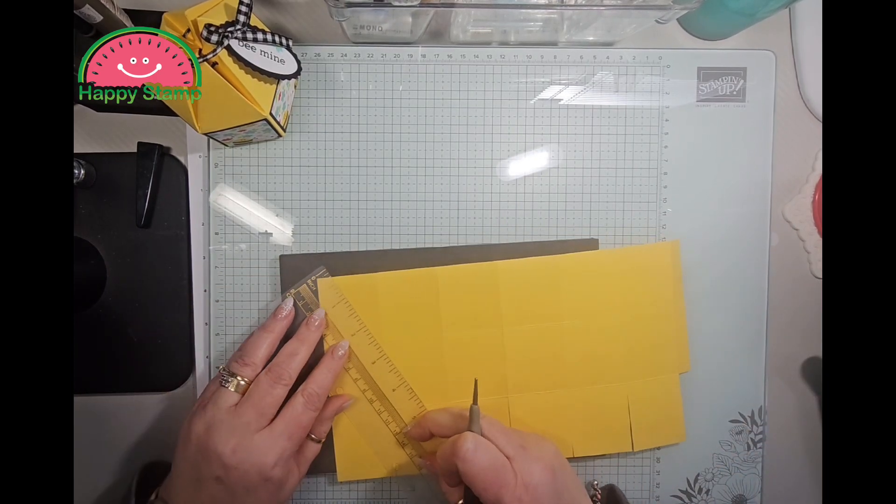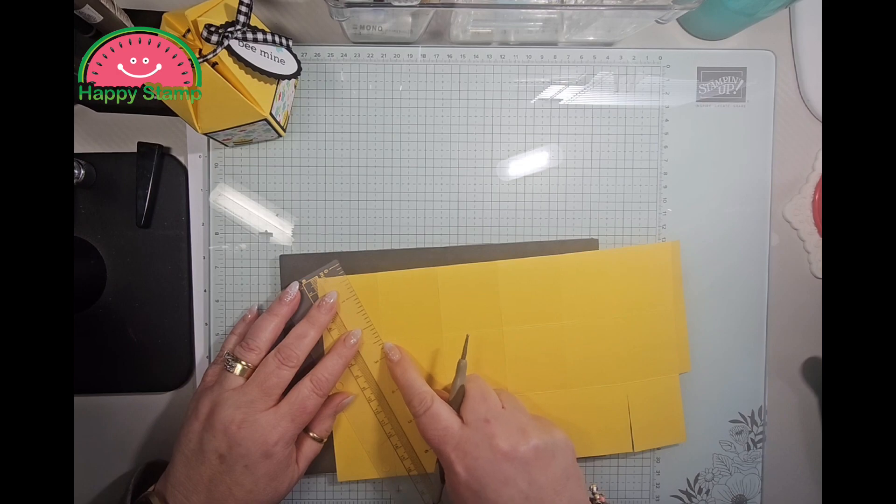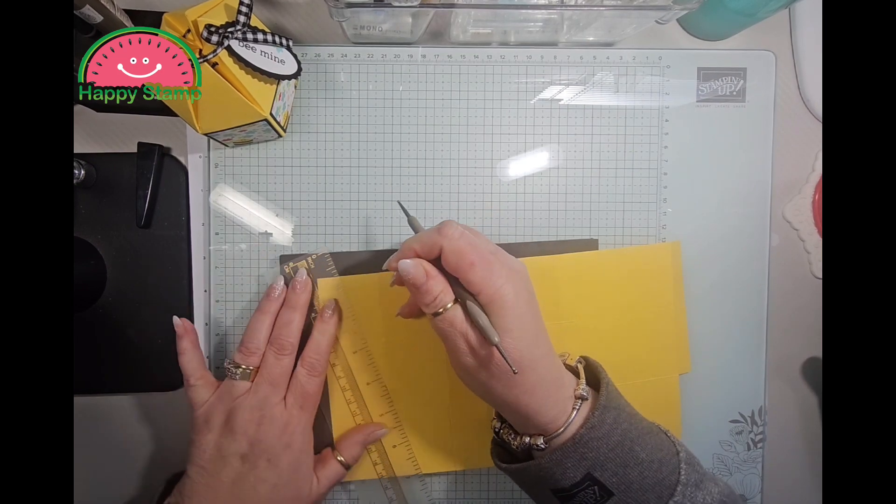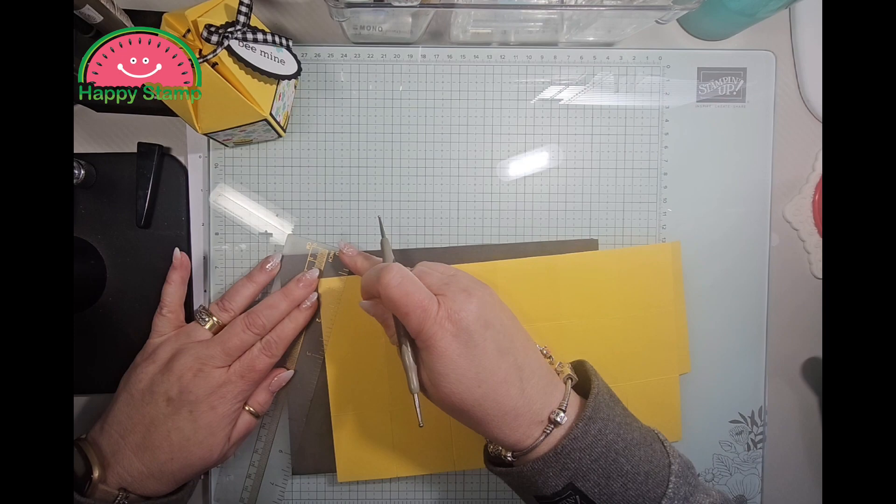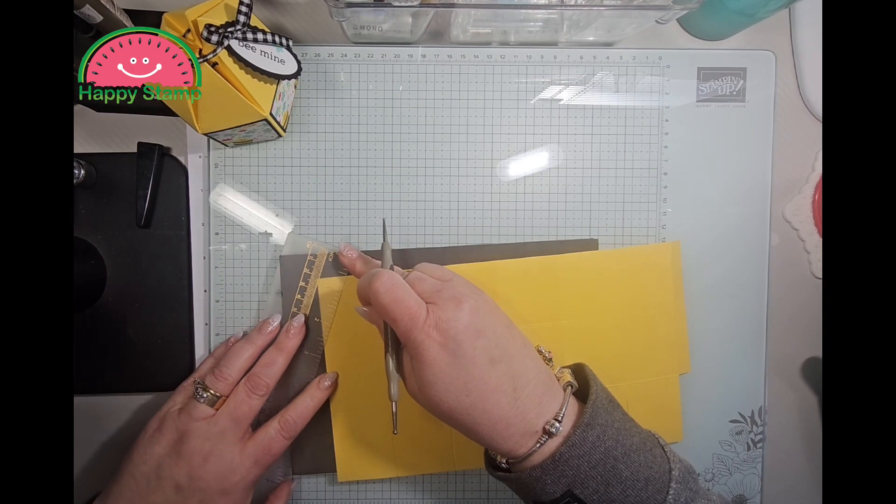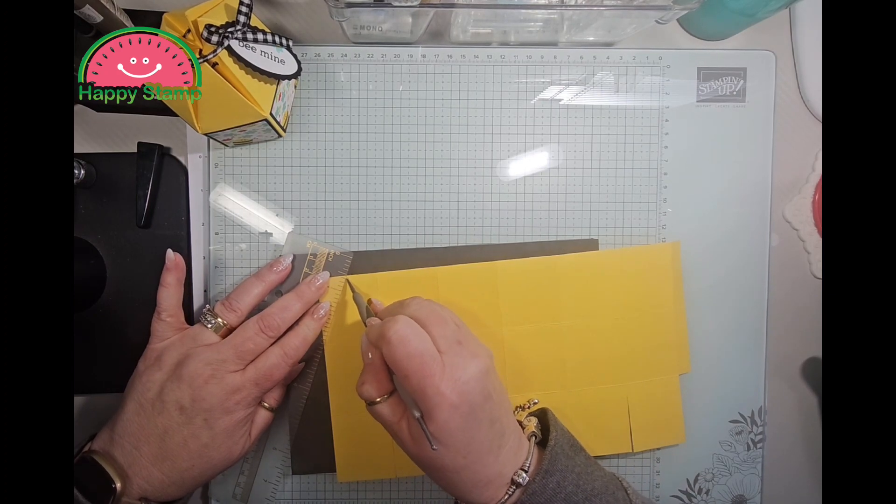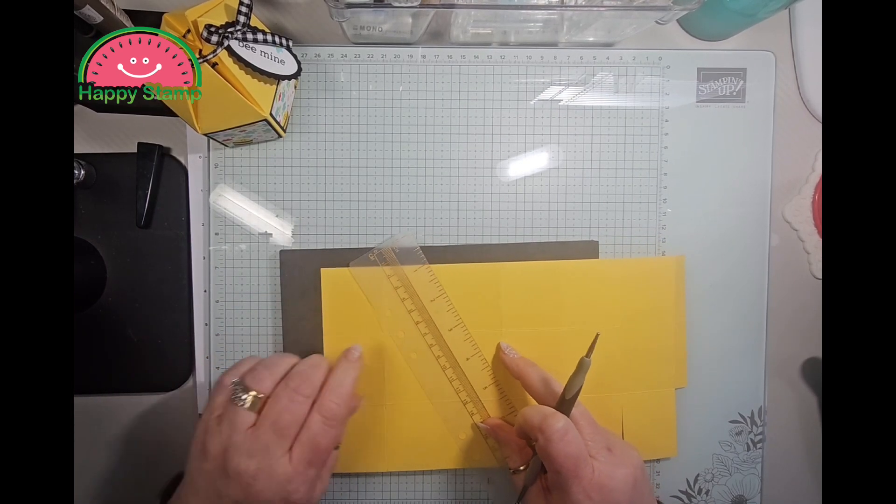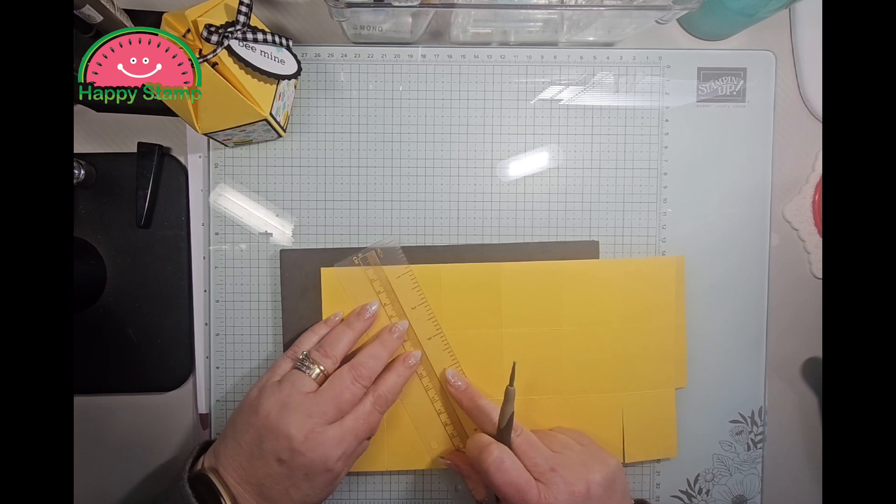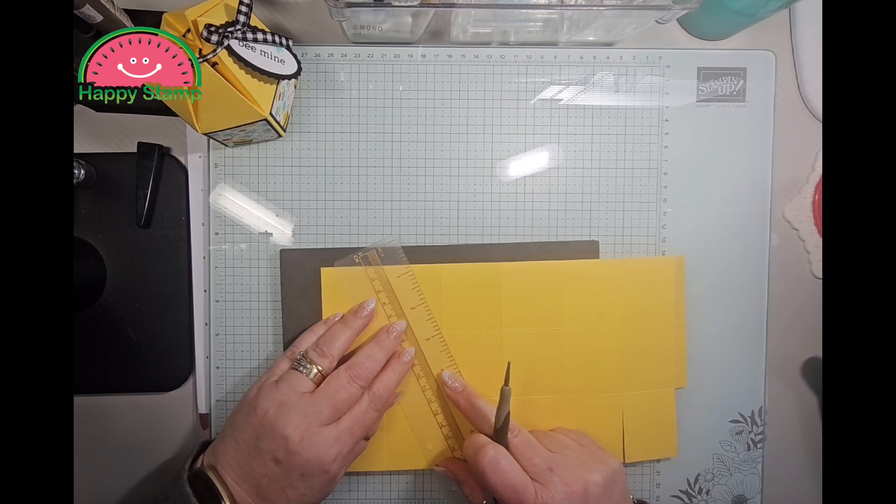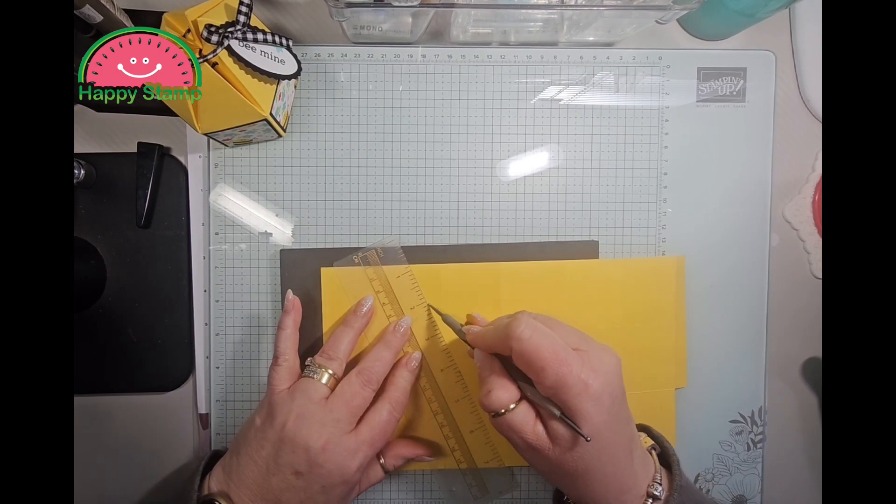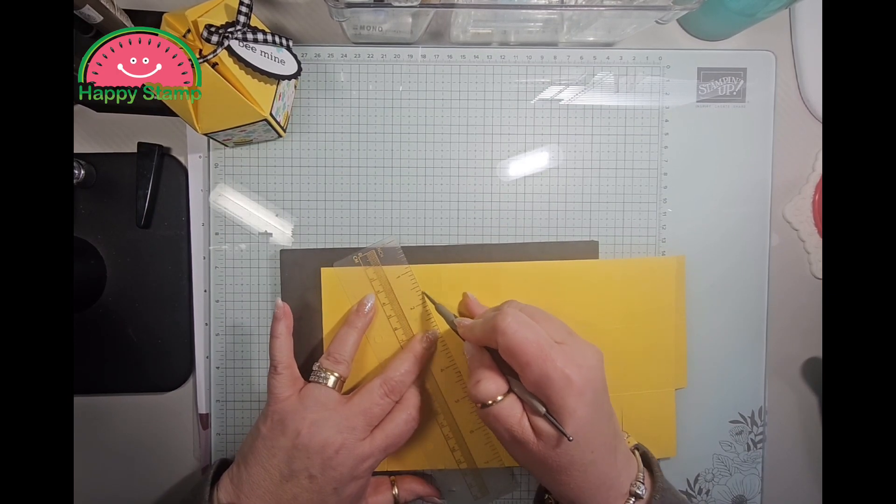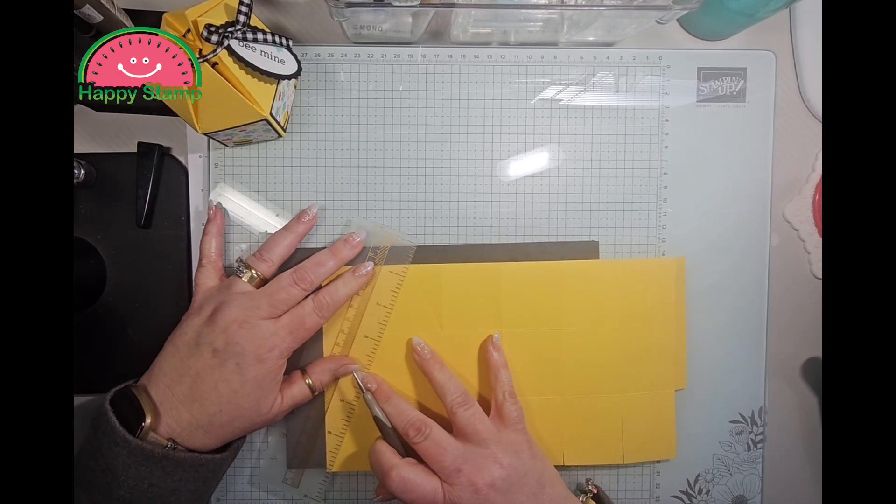All right, now we're going to take the ruler and we're going to go from that tick mark down to this first score line and we are going to score. So we're going to do that all the way across. You want to make sure that you get a good score line but you don't want to poke your stylus through the cardstock, which would be kind of hard to do because this is cardstock and not designer series paper, but it is possible. You also want to make sure to get right on these lines.